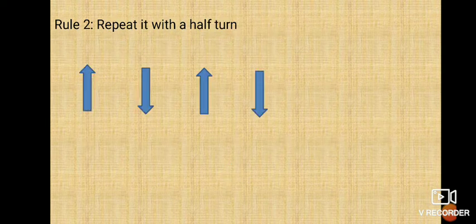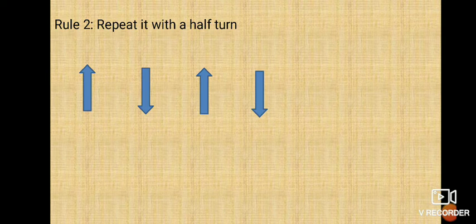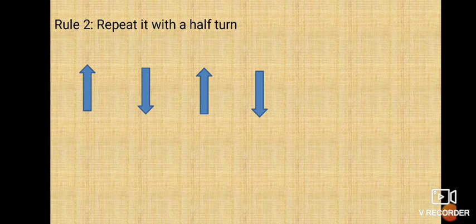Rule number two: repeat it with a half turn. Half turn will be of 180 degrees. One-fourth was 90 degrees and half turn will be 180 degrees. Here we are going to see the pattern only — how the pattern is repeated. The first arrow is showing upward direction, the second arrow downward, the third arrow upward, the fourth downward, and if I want to draw the fifth one I shall draw the arrow showing upward direction. This way you can continue the pattern as much as you want. This is a half turn pattern.